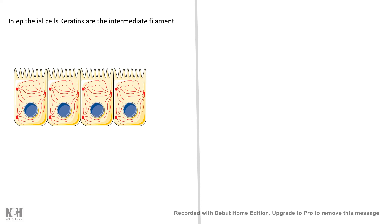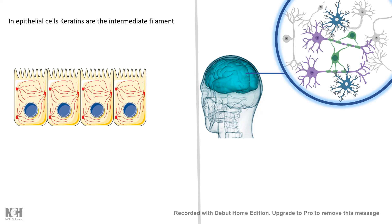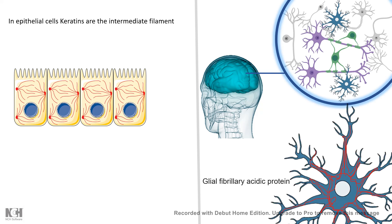Intermediate filaments are found throughout our epithelial cells. We also find specific intermediate filament proteins in glial cells, especially astrocytes. This is called glial fibrillary acidic protein, or GFAP, which is widely used as an astrocyte marker and is nothing but an intermediate filament.